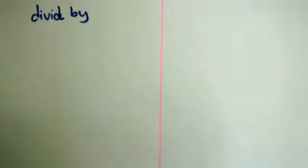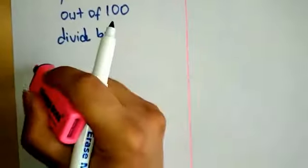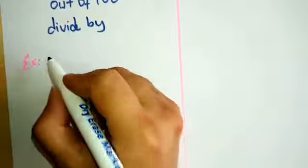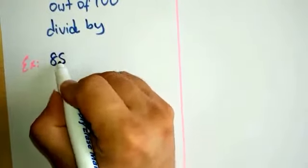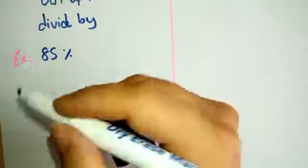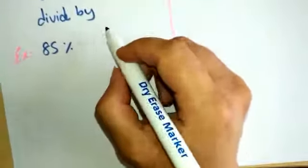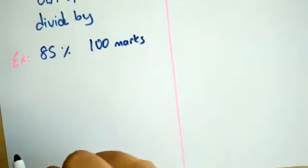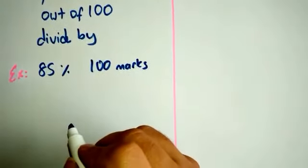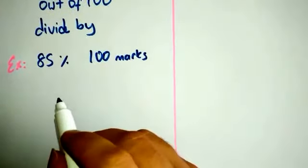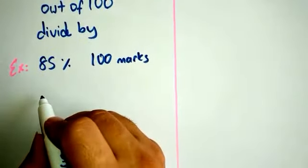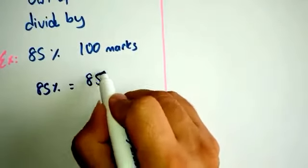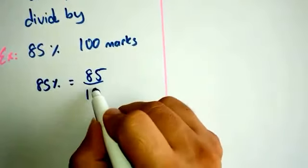For example, if you score 85% on a test, then if there were a possible hundred marks altogether, you would achieve 85 marks, because 85% can be written as 85 out of hundreds.